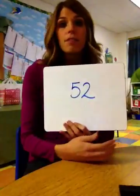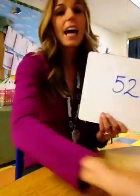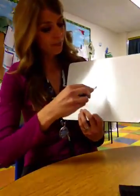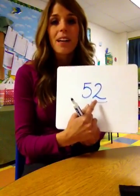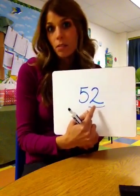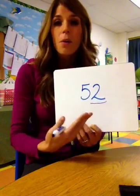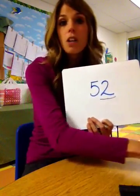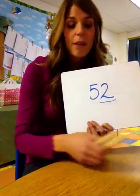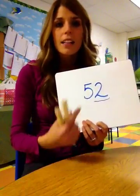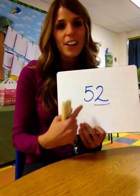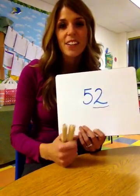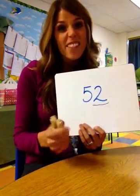For example, if you see the number 52 and I underline the 2, and I ask you what is the value of this number — that means, what does this number mean? How much is it worth? To identify the value of a number, we're going to use our bundle sticks that we've been using in class. Let's make the number 52. How many groups of ten are in the number 52? If you said five, you're right.